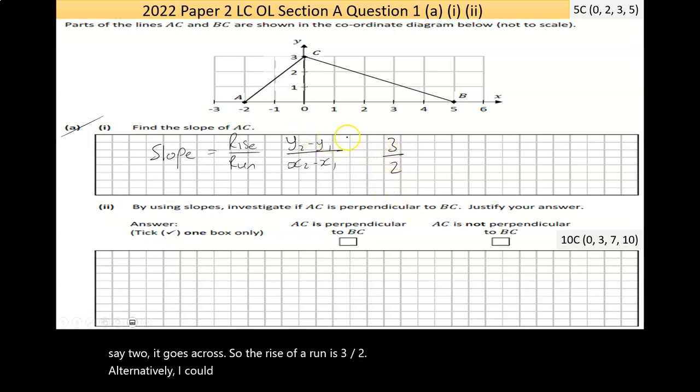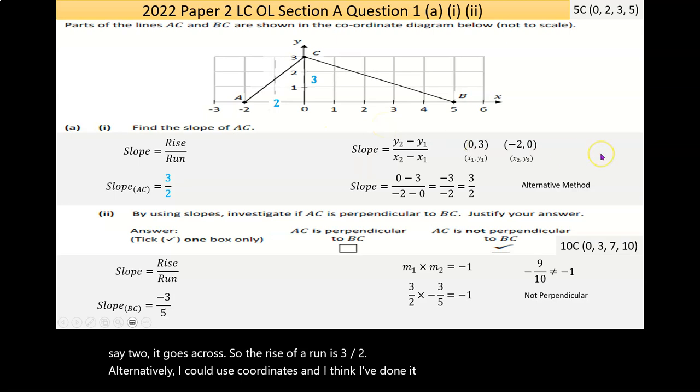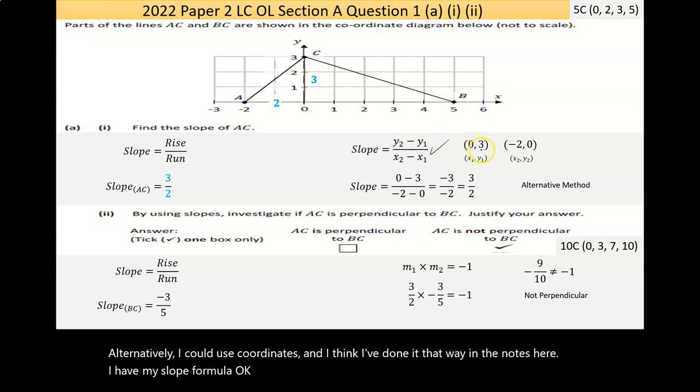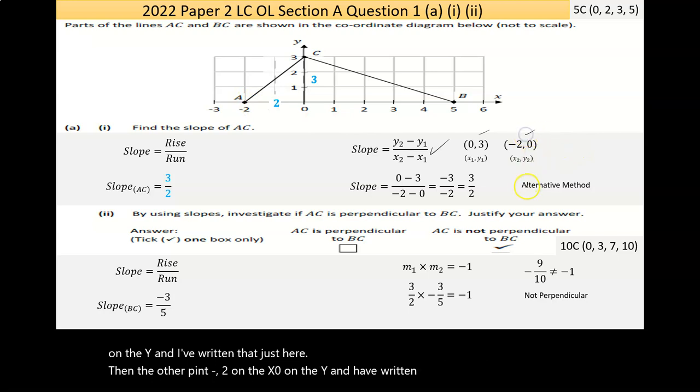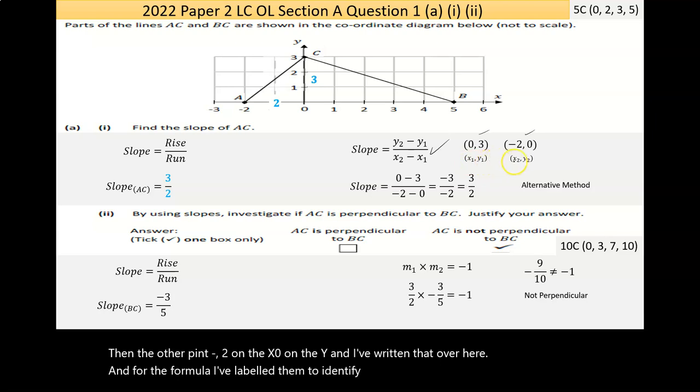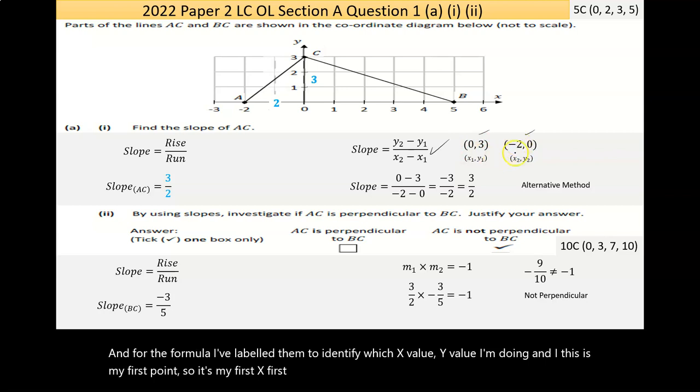Alternatively, I could use coordinates, and I think I've done it that way in the notes here. I have my slope formula, and I've taken the two points. So the points up here, 0 on the x, 3 on the y, and I've written that just here. Then the other point, negative 2 on the x, 0 on the y, and I've written that over here. For the formula, I've labeled them to identify which x value and y value I'm doing. This is my first point, so it's my first x, first y, second x, second y.